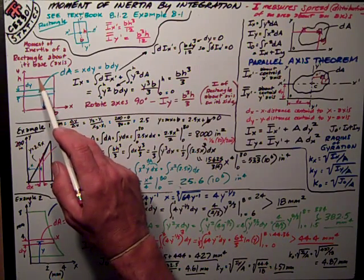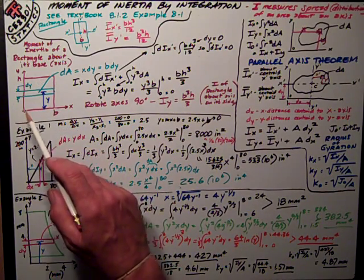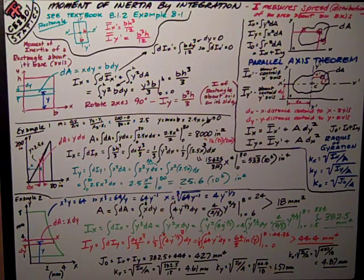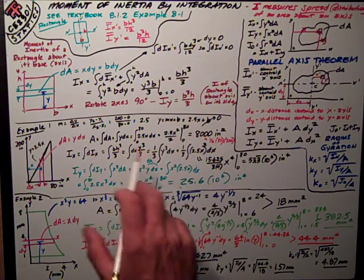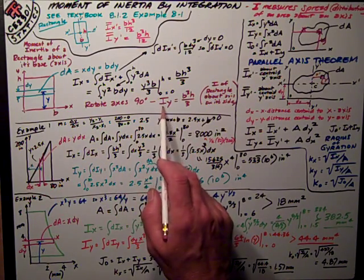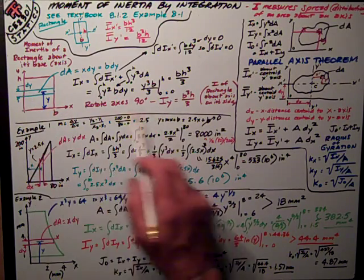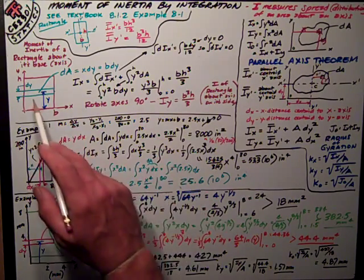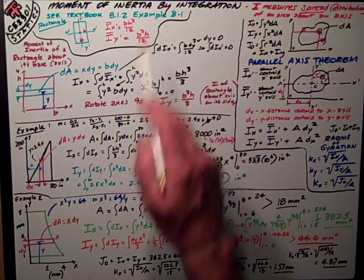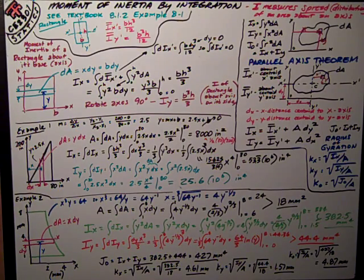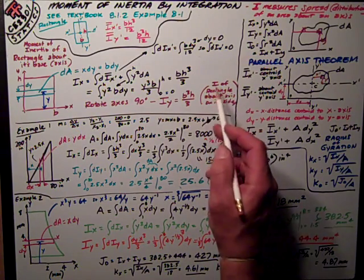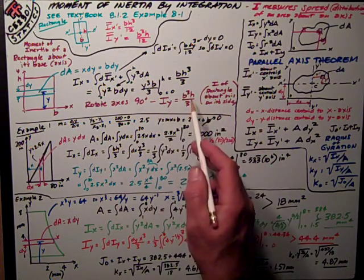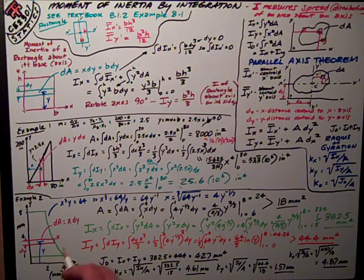So that's the moment of inertia of a rectangle about its own base axis passing through there. I can also see that if I rotate my axis 90 degrees, that iy is just going to be equal to b³h/3, which is similar to this example. The moment of inertia of a rectangle about an axis on its side is b³h/3.